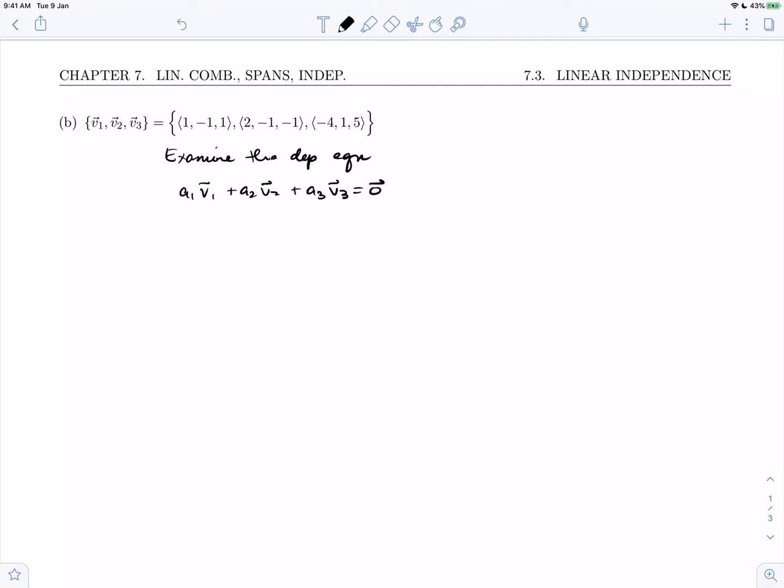If this equation has non-zero solutions, then the set will be linearly dependent, and if there is only the zero solution, our set will be linearly independent. To determine the number of solutions, we need to look at the equivalent homogeneous system.